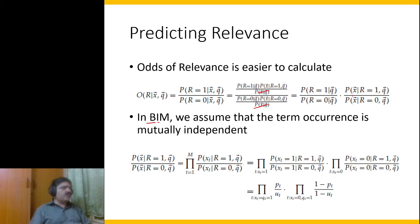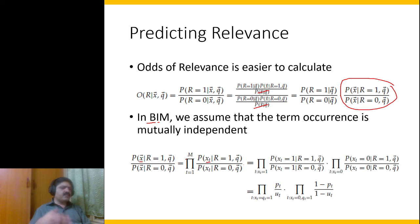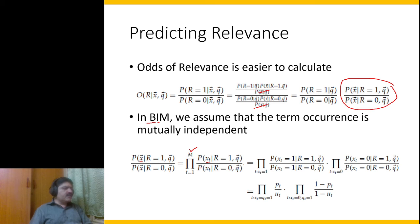Given these two assumptions, we decompose the document probability as a product of term probabilities. The document vector, which is a binary vector of terms, gets decomposed as a product from t=1 to m: P(x_t) — the probability of each term appearing — multiplied together. This follows from our independence assumption.